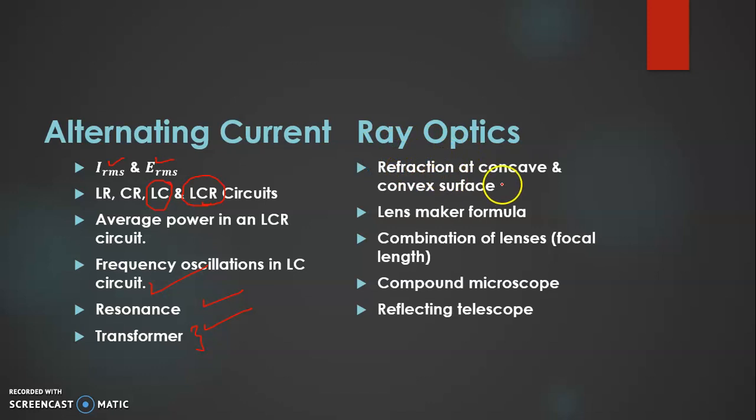Now from ray optics, refraction at concave and convex surface, do it. Lens maker formula, the derivation as well as the numerical is very important. Every year you may see that there are sums from lens maker formula. Then combination of lenses, please do it properly, combination of focal length also. Last year simple microscope came, so this year I feel compound microscope and reflecting telescope is important.